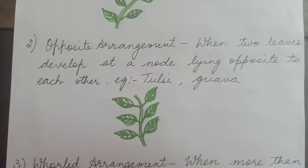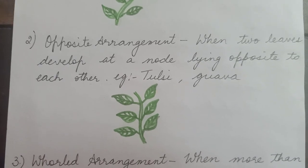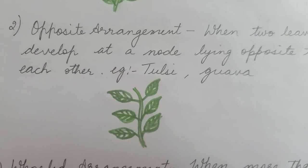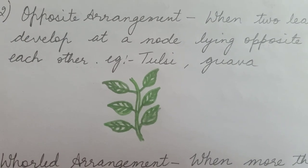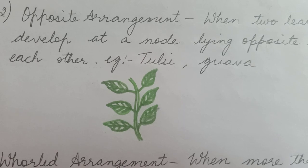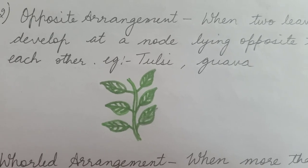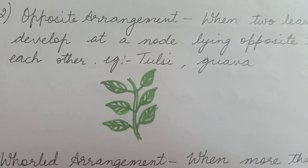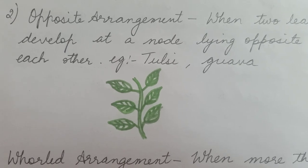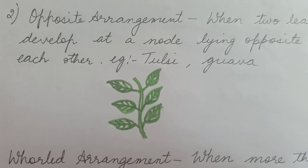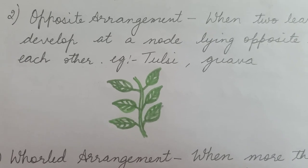Now we study the next kind of arrangement, which is opposite arrangement. When two leaves develop at a node lying opposite to each other, it is called opposite arrangement. You can see in the picture that two leaves are present opposite to each other. This kind of arrangement can be seen in the leaves of tulsi and guava.